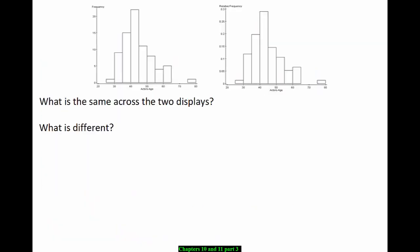Let's compare our frequency histogram with our relative frequency histogram. The frequency histogram is on the left and the relative frequency histogram is on the right. What's the same across these two displays? Well, the shape of the distribution is exactly the same.